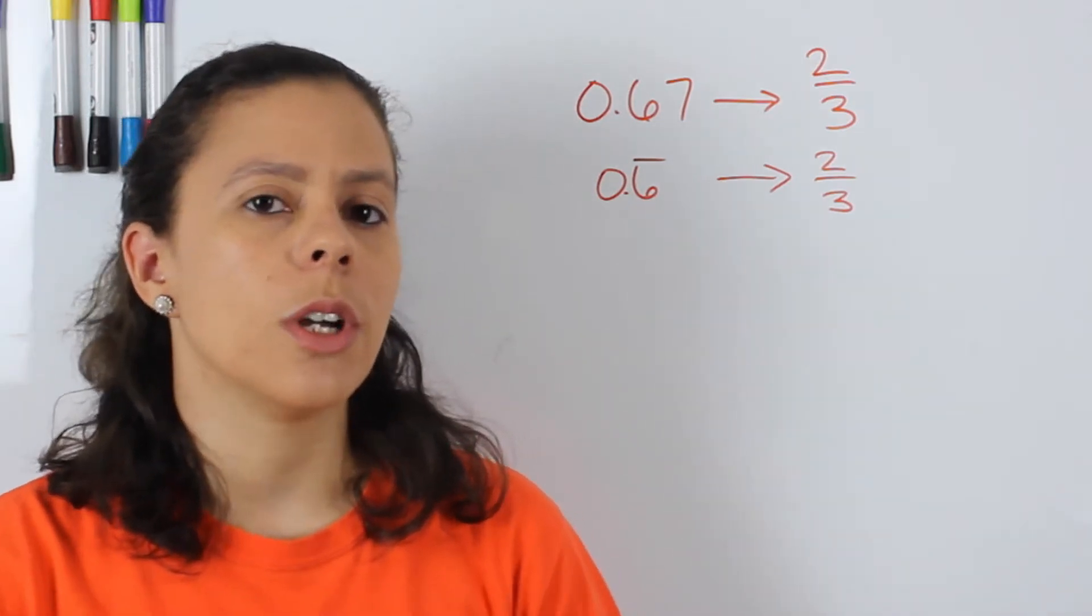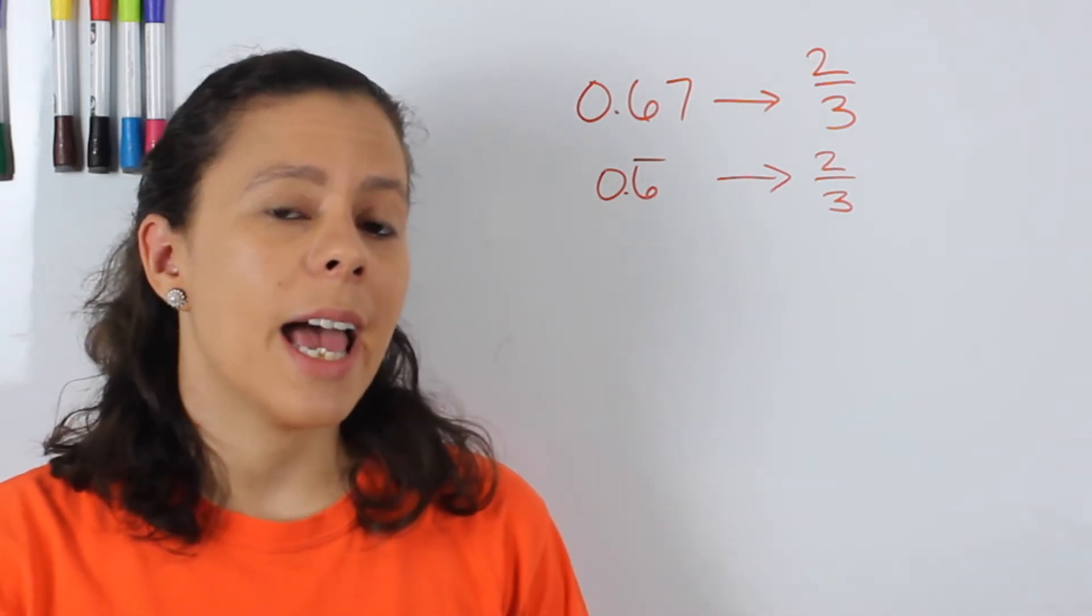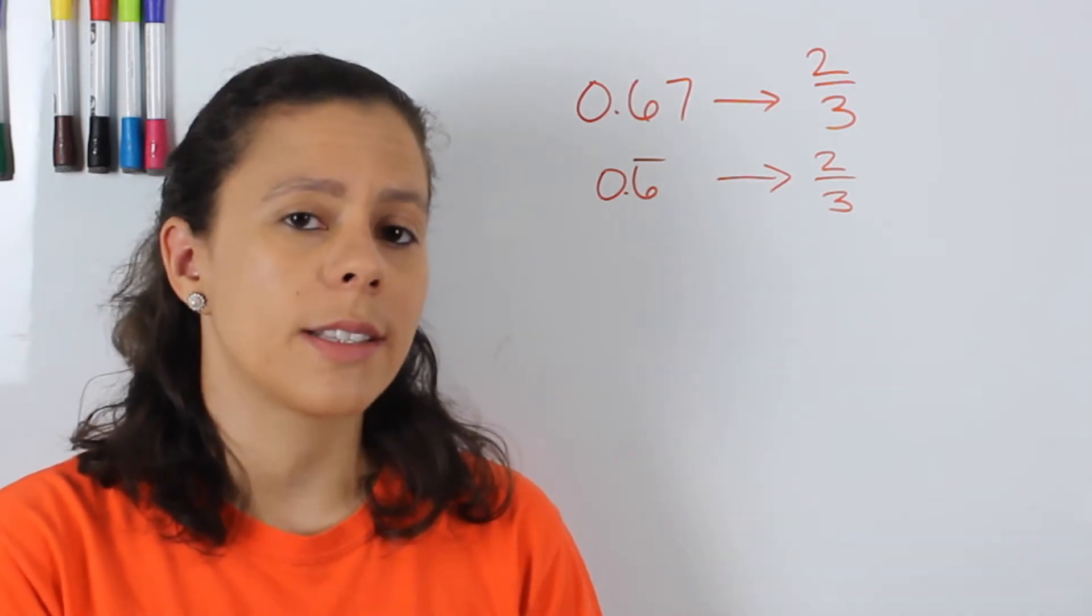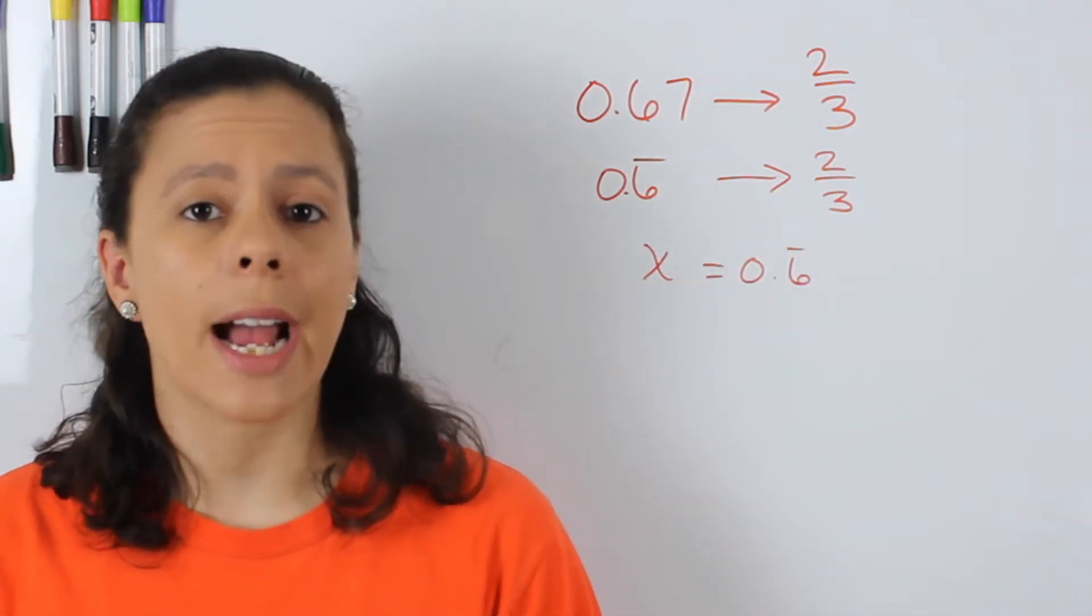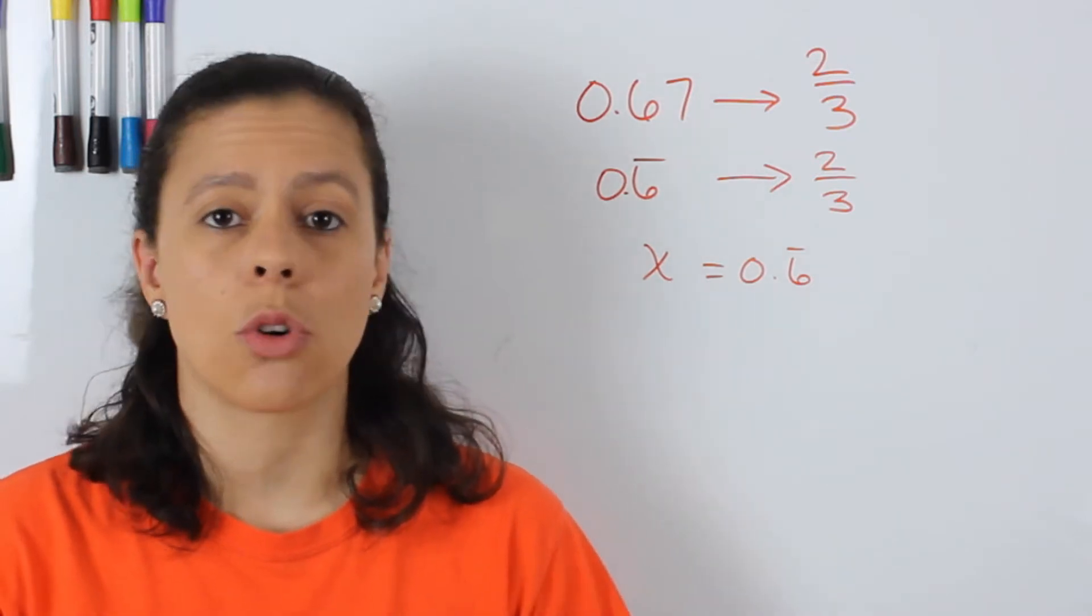Well the first thing that we're going to do is we're going to set it up as x equals to 0.6 repeating. And in this case, my x is just going to be the fraction that that 0.6 repeating is going to be.